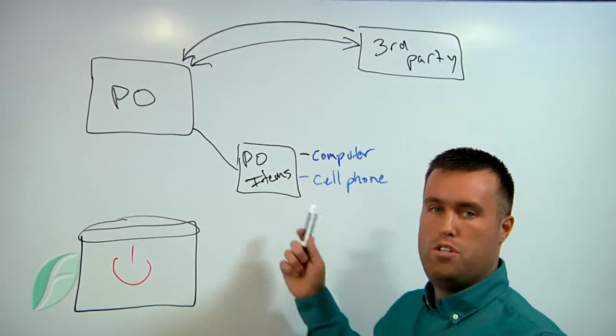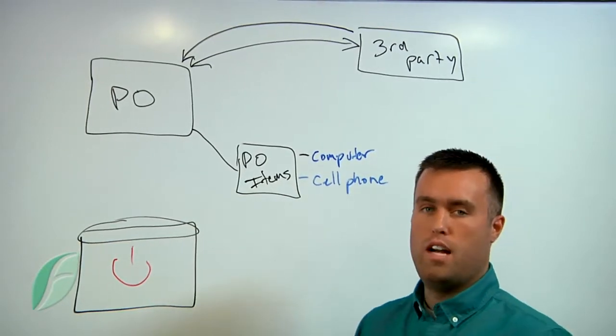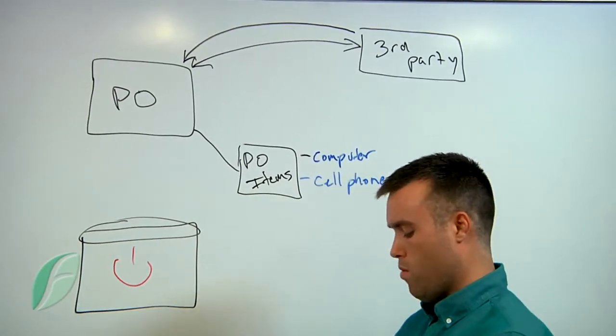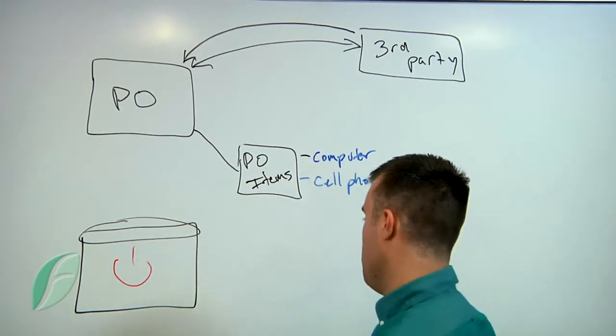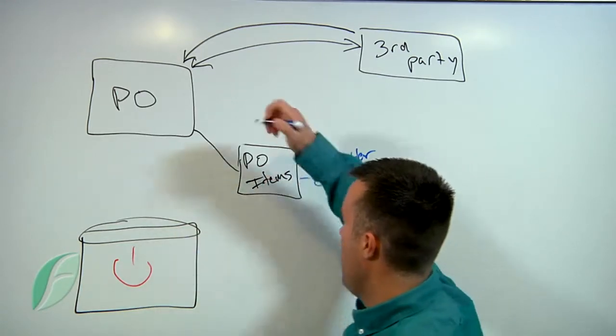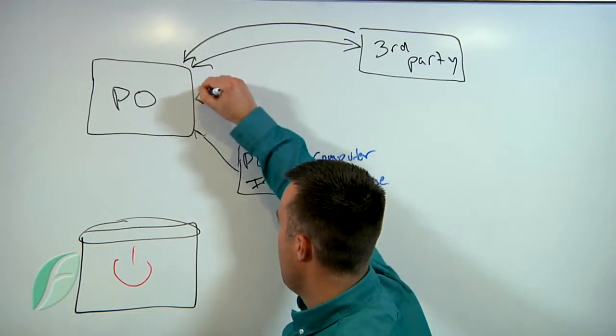From there, once you've generated that purchase order, sent it out, and are actually trying to order those items, we'll need to track those when they're coming back in. So what we have for that is our invoice table.